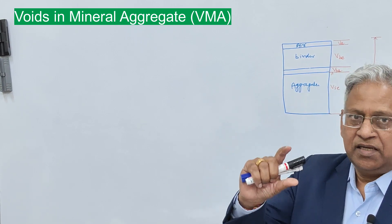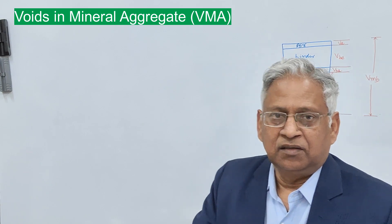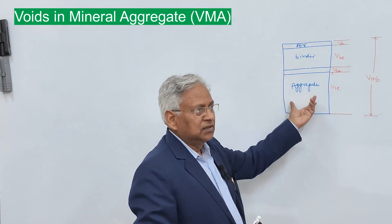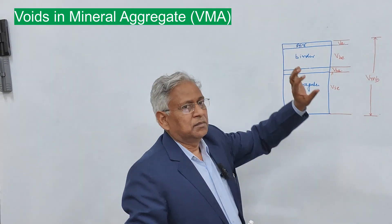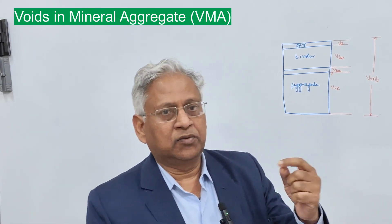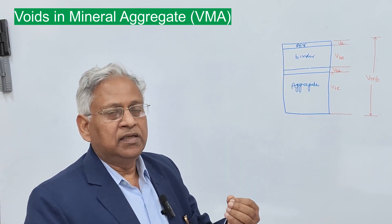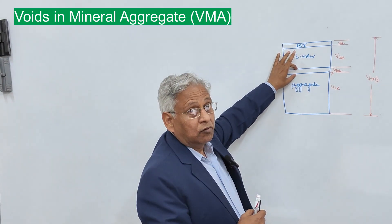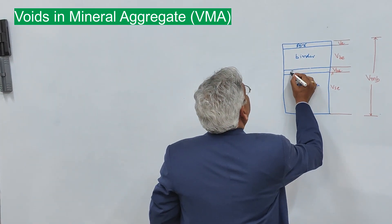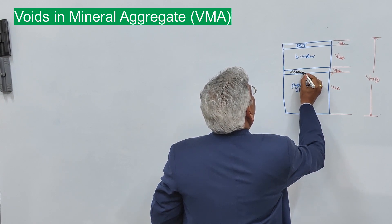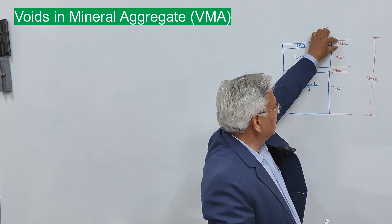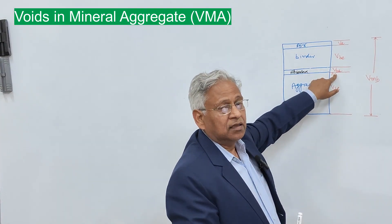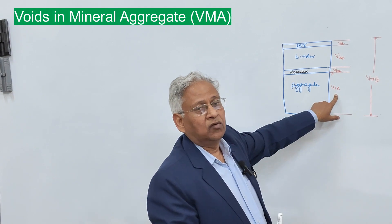What is voids in mineral aggregate? If you take a specimen or a mixture of bituminous mix, these are the components: you have aggregate, you have the binder, and some air. Now, some part of this binder is absorbed by the aggregate, depending upon the porosity of the aggregate. This part is the absorbed binder, and the remaining is the effective binder.